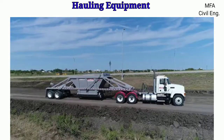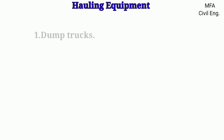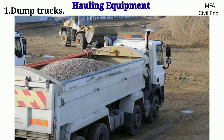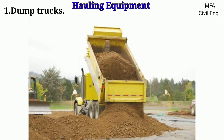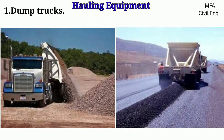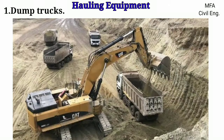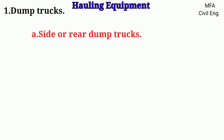Road haulers are classified according to the method of dumping the load, like dump trucks and dumpers. Dump trucks are used for earth moving purposes. Dumping of the earth can be done on the rear, on the side, or at the bottom of the truck. The selection of the type of dumping truck for a specific job depends on the soil conditions and the nature of the hauling road. Therefore, dump trucks are further classified as side or rear dump trucks and bottom dump trucks.